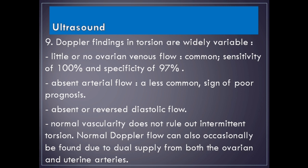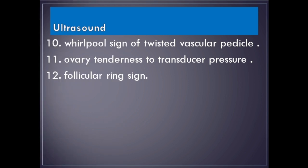Doppler findings in torsion are widely variable. Little or no ovarian venous flow is common, with a sensitivity of 100% and specificity of 97%. Absent arterial flow is a less common sign and indicates poor prognosis. Absent or reverse diastolic flow may also be seen. Normal vascularity does not rule out intermittent torsion, and normal Doppler flow can occasionally be found due to dual supply from both the ovarian and uterine arteries.